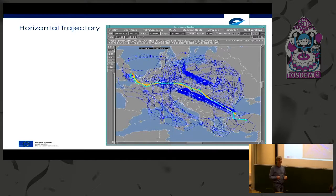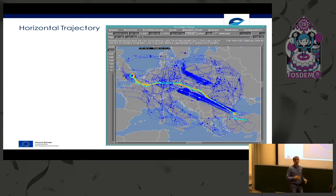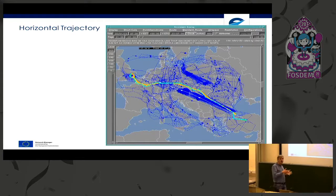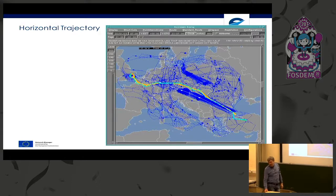We also provide a route optimization service. Aircraft operators can call our system and say 'please find me a good route,' and we have to search many paths. Basically it's a shortest-path algorithm — Dijkstra — but we can't use a pure Dijkstra. There are constraints that cannot be modeled in a simple graph, so searching even the N shortest routes is a lot more complex than a typical similar problem.